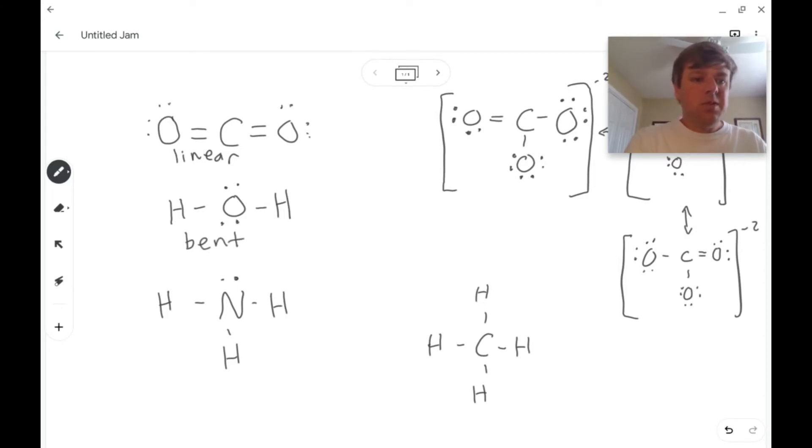For the next example, if we count the atoms bonded to nitrogen, we've got one, two, three atoms attached, plus an unbonded pair of electrons, and if you were to consult the chart, that means it would be trigonal pyramid, or trigonal pyramidal, depending, which is this shape.